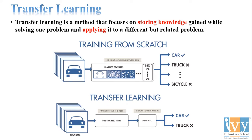Transfer learning is a method that focuses on storing knowledge gained while solving one problem and applying it to different but related problems. In conventional training, we design an algorithm from scratch so features are learned and classification is done. With transfer learning, instead of designing the model again, we use pre-trained knowledge for new models.